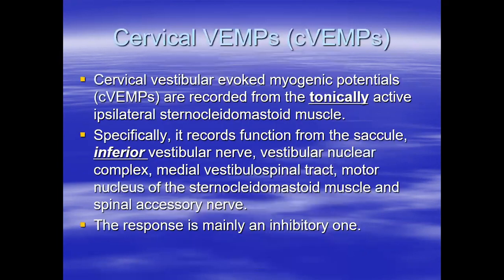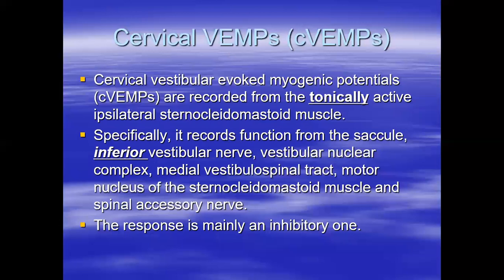We have two main types of vestibular evoked myogenic potentials. The first, discovered around 1990 by James Colebatch in Australia and his team, is the cervical vestibular evoked myogenic potential — C-VEMP. It is recorded from the tonically active sternocleidomastoid muscle. This is all surface recording — there is nothing invasive. We record from the sternocleidomastoid muscle on the same side as the ear being stimulated.